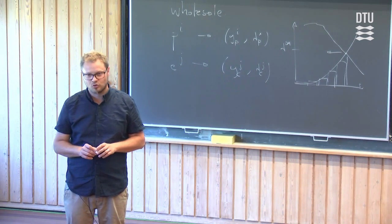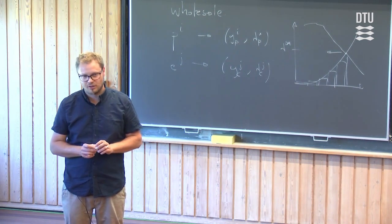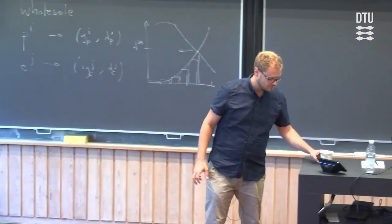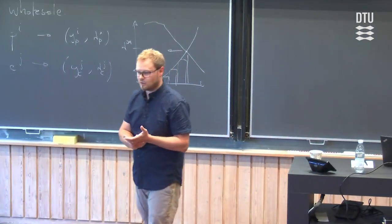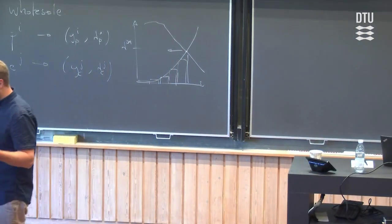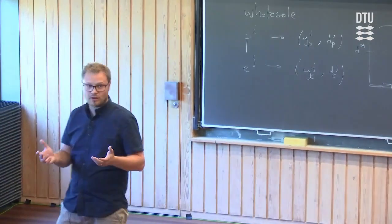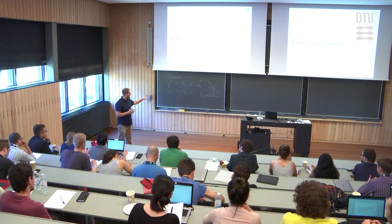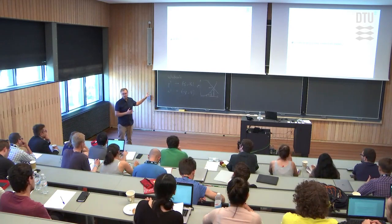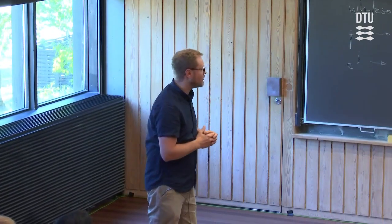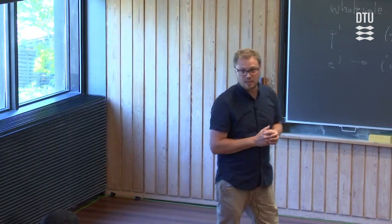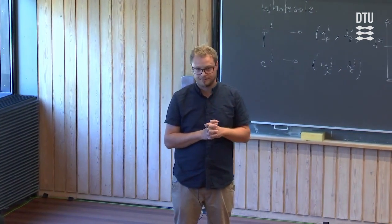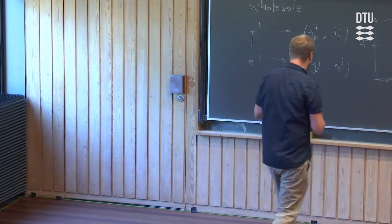That's very basic two-minute market theory. There's a lot more to it in a full course covering economic dispatch and power flows. You can write this graphical problem as an optimization problem where you want to maximize social welfare — the sum of consumer utility minus producer cost.